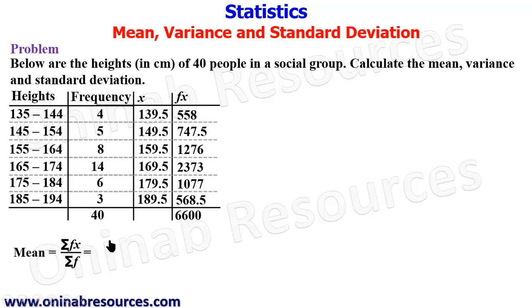So we substitute: summation of fx is 6600 divided by 40, which is the summation of f, and this gives 165 centimeters. That's all for the mean. We then go ahead to calculate the variance.